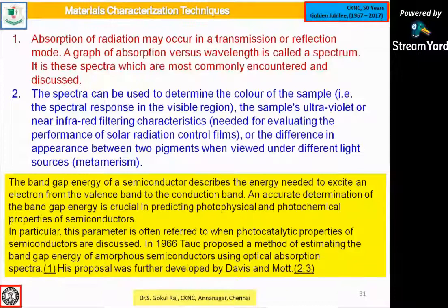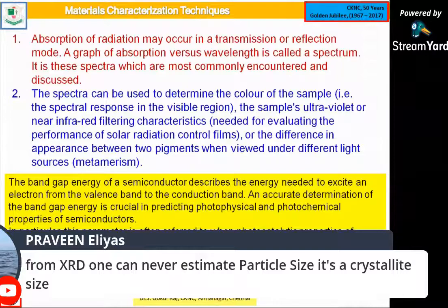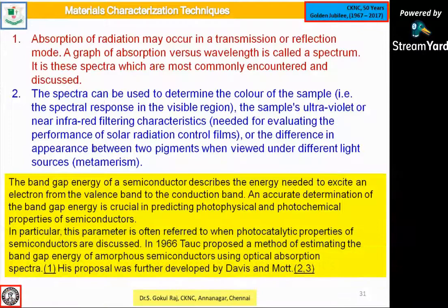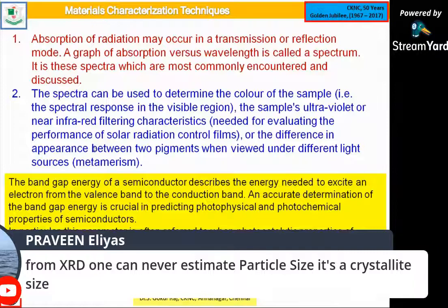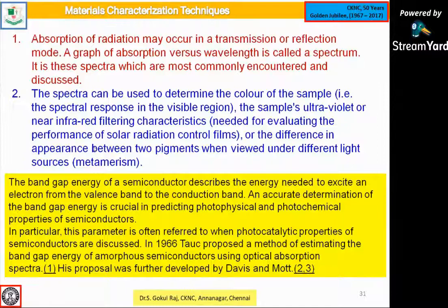The absorption spectra can determine the color of the sample, specific response in the visible region, and ultraviolet or near IR filtering characteristics — needed for evaluating solar radiation control films. For single crystal optical applications like second harmonic generation or third harmonic generation, optical transmittance can be measured. From the visible spectrum, we can also find the band gap of a semiconductor, which describes the energy needed to excite an electron from the valence band to the conduction band.